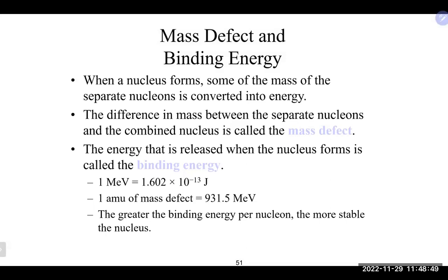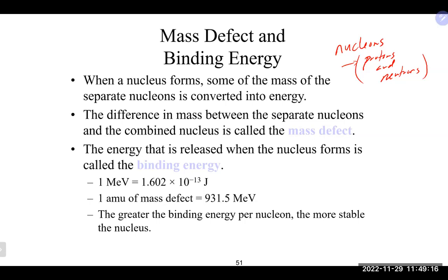When the nucleus forms, the mass of the separate nucleons is converted into energy. Nucleons refers to what's in the nucleus — our protons and neutrons. That difference between the mass of how many protons and neutrons you have and the mass of the isotope — that little bit — is converted into energy.